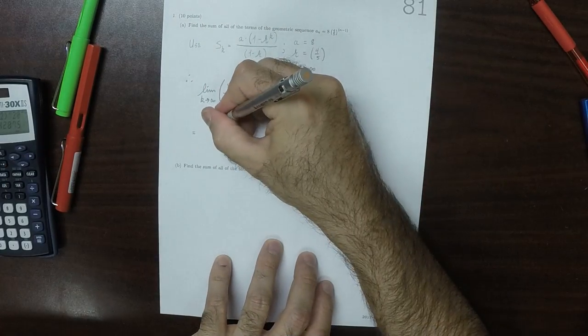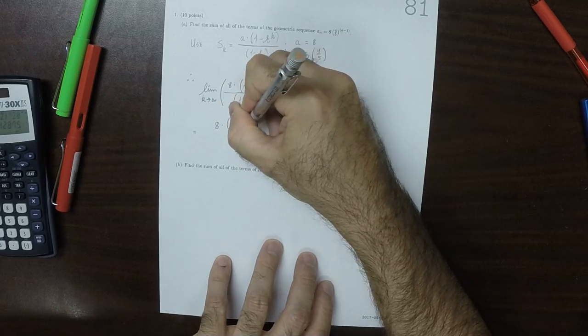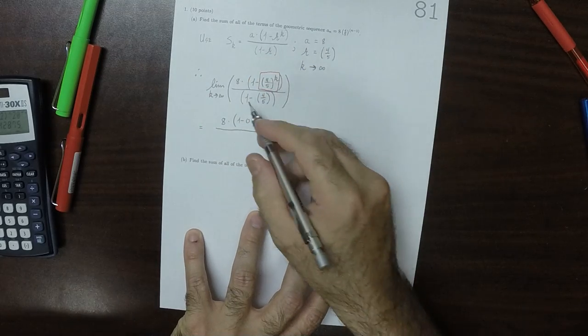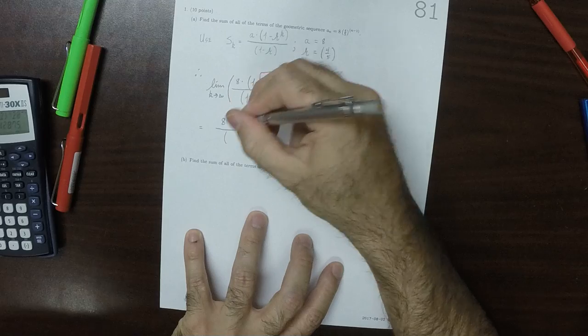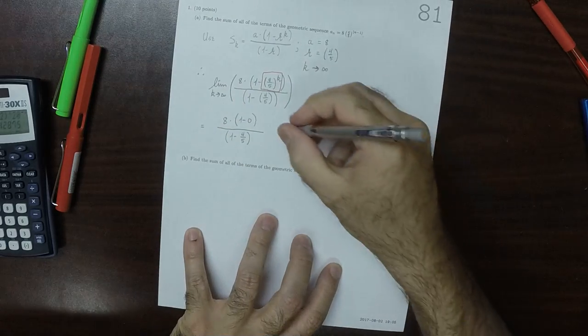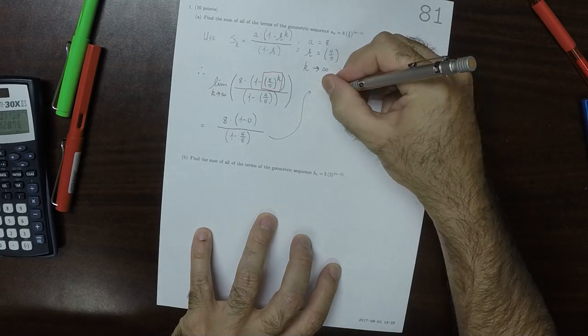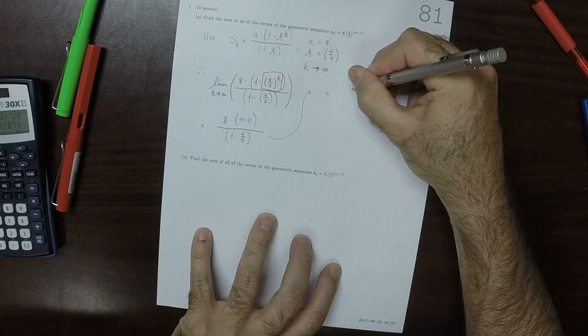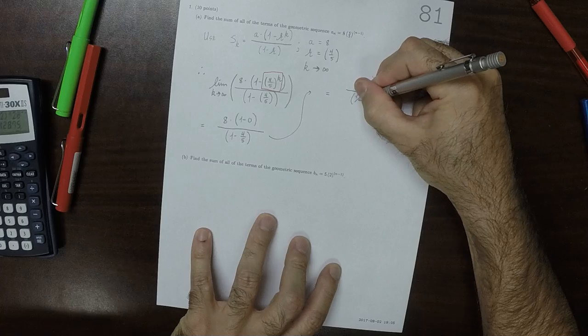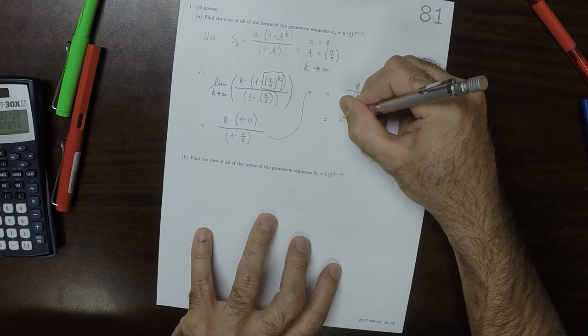So the answer is 8 multiplied by 1 minus 0, divide by 1 minus 4/5. Simplifying a little bit, in the numerator that would be 8, and then divide by, well, 1 minus 4/5 is 1/5. And then 8 divided by 1/5, that's 40. So the answer is 40.